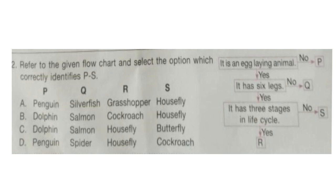Question 32. Refer to the given flow chart and select the option which correctly identifies P to S. The flow chart is: is it an egg-laying animal? No — then it is P, which can be dolphin. It can't be penguin as it gives birth to young ones. So options A and D are not possible. Is it an egg-laying animal? Yes. Does it have six legs? No — then it is Q, which is salmon. Does it have six legs? Yes — then does it have three stages in its life cycle? Yes — then it is R, which can be cockroach. So the answer will be option B.